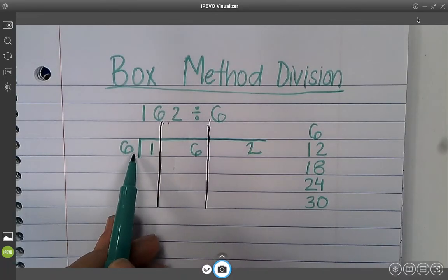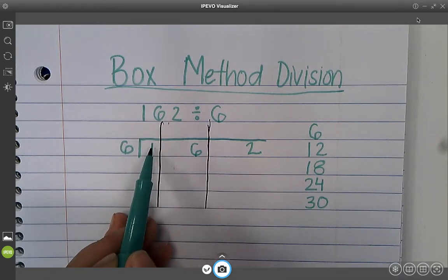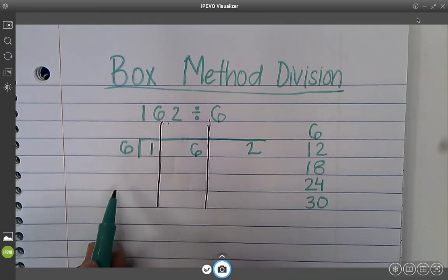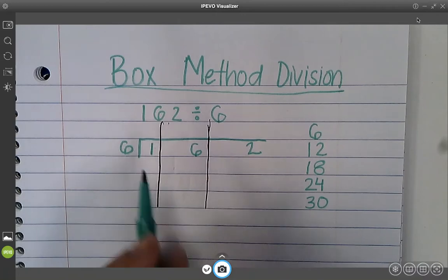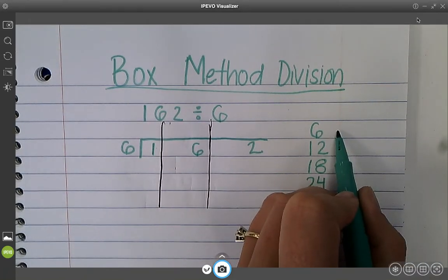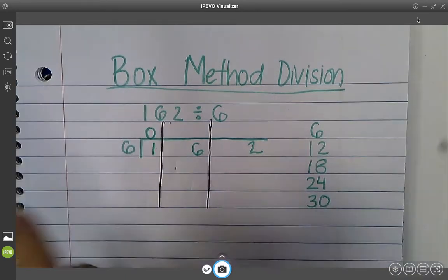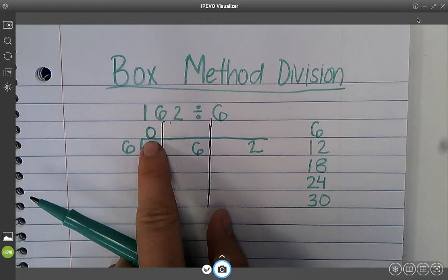So 6 needs to go into 1 or need to divide. We need to take 1 and divide it by 6 groups. Well, currently we can't do that because our smallest number is 6. Okay, in our multiples. So there's no number we have. Anytime there's no number, you can put a 0 on top.